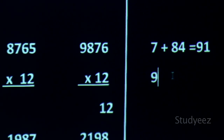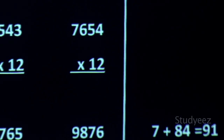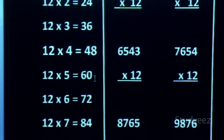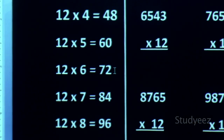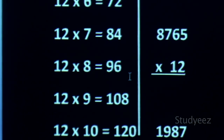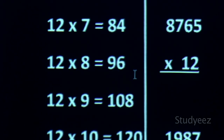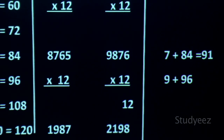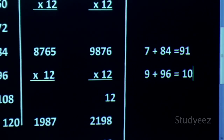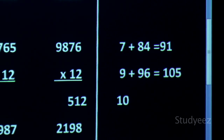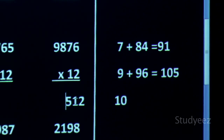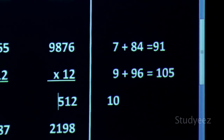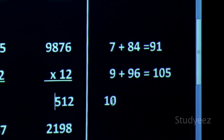For 12×8: 12×1=12, 12×2=24, 12×3=36, 12×4=48, 12×5=60, 12×6=72, 12×7=84, 12×8=96. You add 9 (carry) plus 96, which gives you 105. You put 5 in the answer and 10 as carry in the rough column.